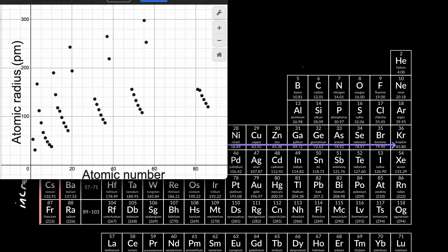And we can confirm this intuition by looking at this plot here. So what this is doing is it's plotting every element in the periodic table of elements based on its atomic number and its atomic radius.